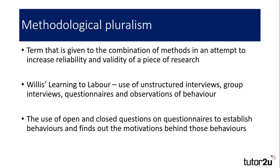Perhaps the most complete way of researching society is to combine these methods, increasing validity by using qualitative methods and reliability by using quantitative ones. This is referred to as methodological pluralism. Researchers will combine methods such as using official statistics to analyse areas of poverty, and then conducting unstructured interviews with people in those areas to see how poverty impacts on their lives. Willis' 'Learning to Labour' is an example of this — using a mixture of questionnaires, observations and unstructured interviews, he investigated the experiences of working class boys that were part of an anti-school subculture. Another example is the now common use of both open and closed questions on questionnaires, collecting quantitative data that illustrates a person's preference or behaviour, then asking open questions to find out why that is the case.